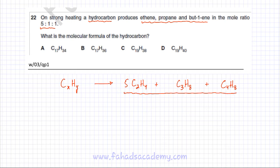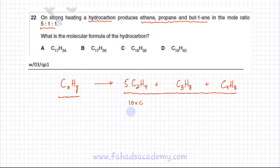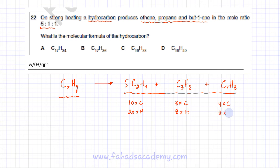You simply need to add up all the atoms — that gives you the total number of atoms in the original hydrocarbon. For 5 ethene: 5×2 = 10 carbons and 5×4 = 20 hydrogens. For 1 propane: 3 carbons and 8 hydrogens. For 1 butene: 4 carbons and 8 hydrogens. Adding up: 10+3+4 = 17 carbon atoms, and 20+8+8 = 36 hydrogen atoms.